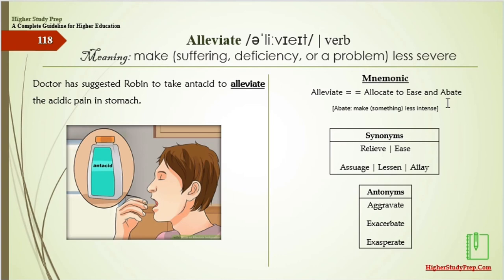The synonyms of alleviate are relieve, ease, assuage, lessen, or allay. On the other hand, the antonyms are aggravate, exacerbate, or exasperate.